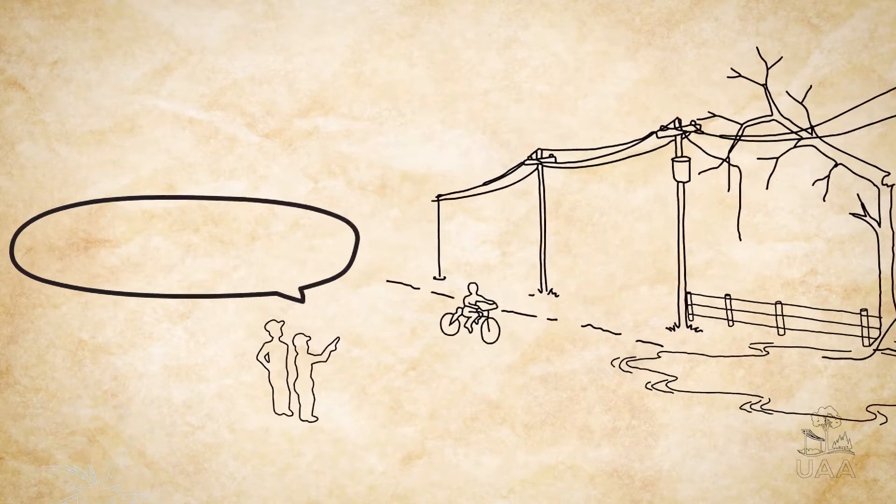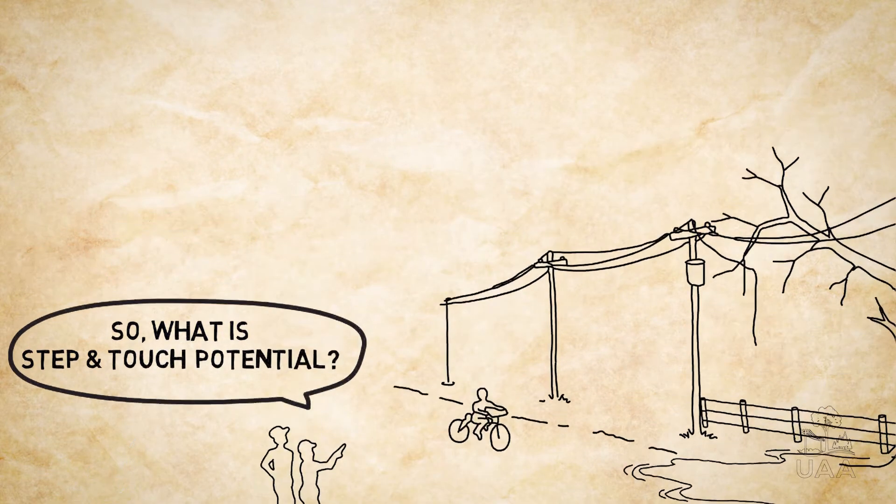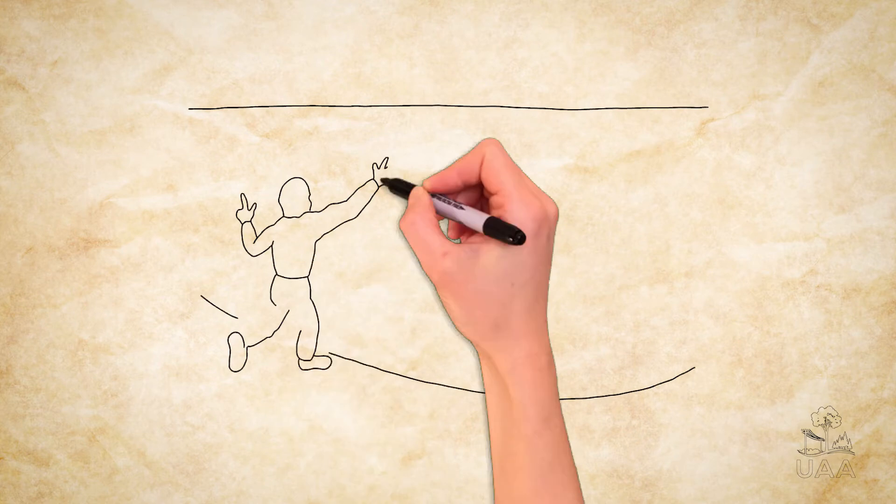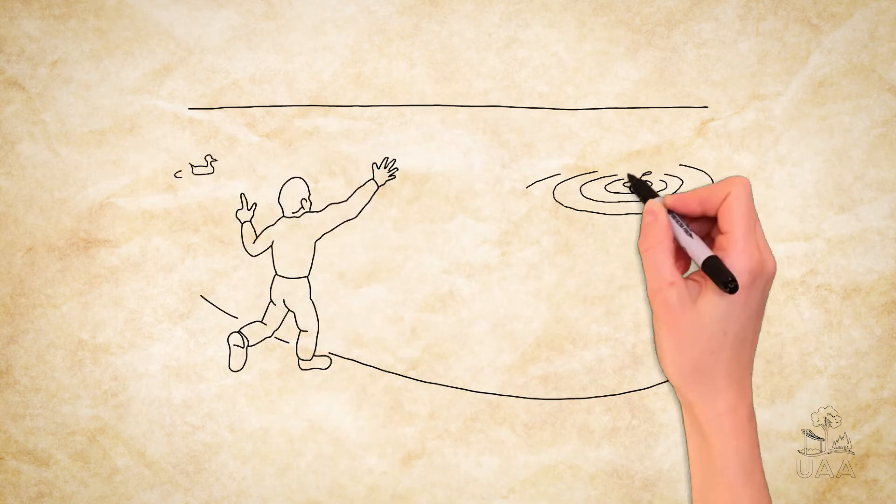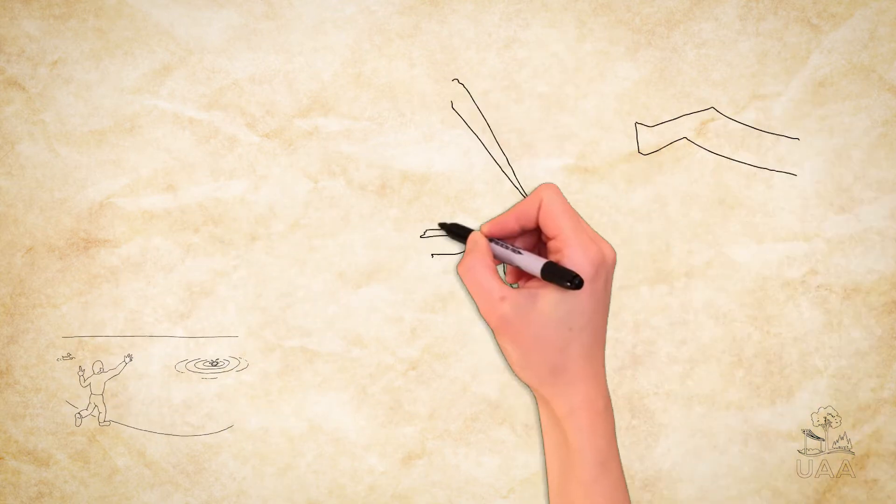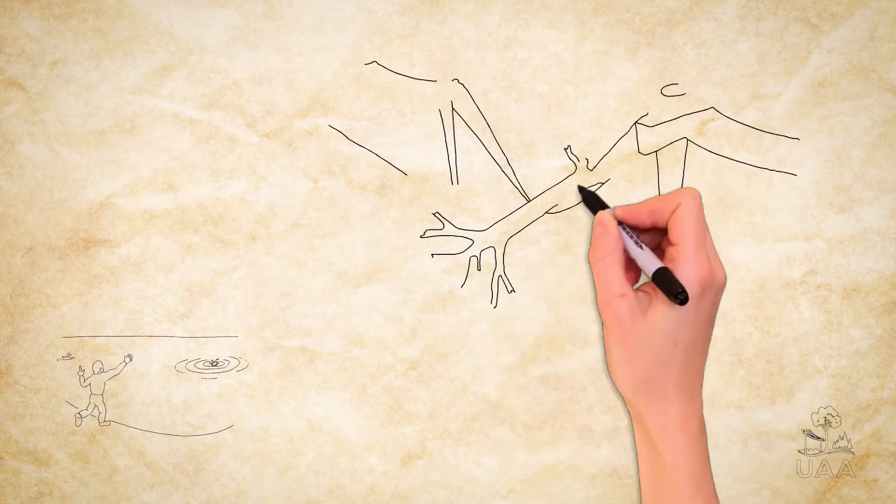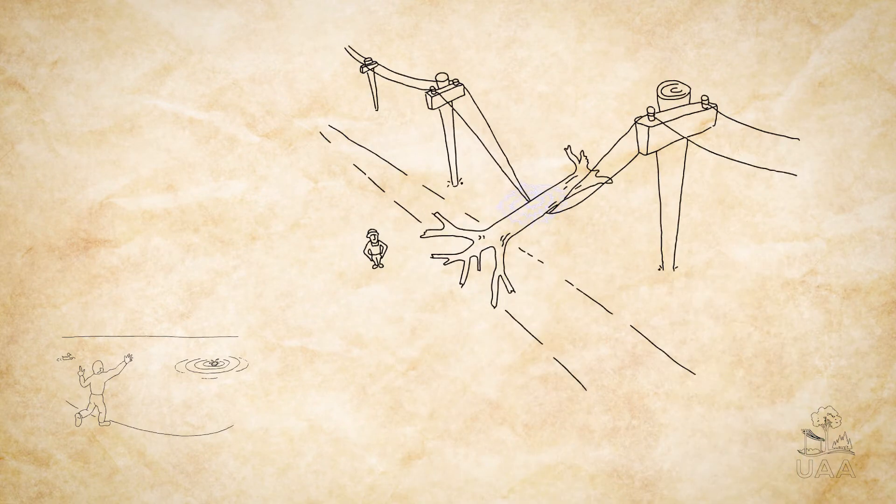Utility arborists, other tree care professionals, and even the general public need to be mindful of these electrical hazards in the field, especially when it comes to step and touch potential. Imagine tossing a stone into a lake. When the rock strikes the surface it creates a ripple effect across the water. This is similar to what happens with electricity from a downed power line when it hits the ground, but the ripples are invisible.